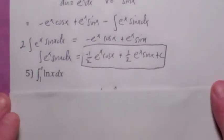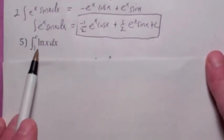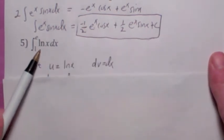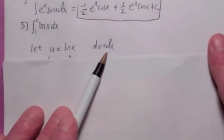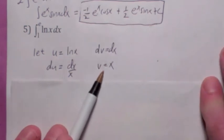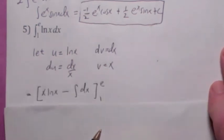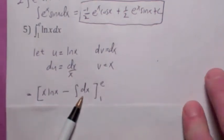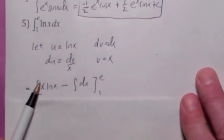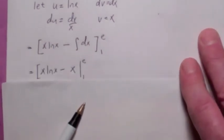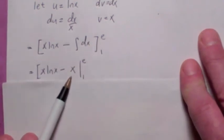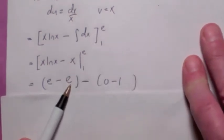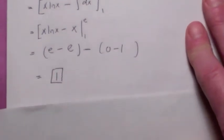Now let's evaluate a definite integral using integration by parts — the integral of ln(x) from 1 to e. Let u equal ln(x), so dv equals dx. Then du equals dx/x and v equals x. Integration by parts gives x ln(x) minus the integral of dx, which is x, all evaluated from 1 to e. Plugging in e gives e times 1 minus e, which is zero. Plugging in 1 gives zero minus 1. So the final answer is 1.